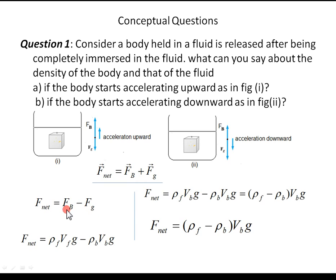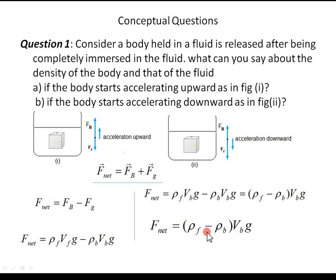Buoyant force is given by density of the fluid times volume of the fluid times g. Gravitational force is density of the body times volume of the body times g. Since the object is completely submerged, the volume of the fluid can be taken as the volume of the body. Factoring out Vb times g, we get the simplified expression for net force.